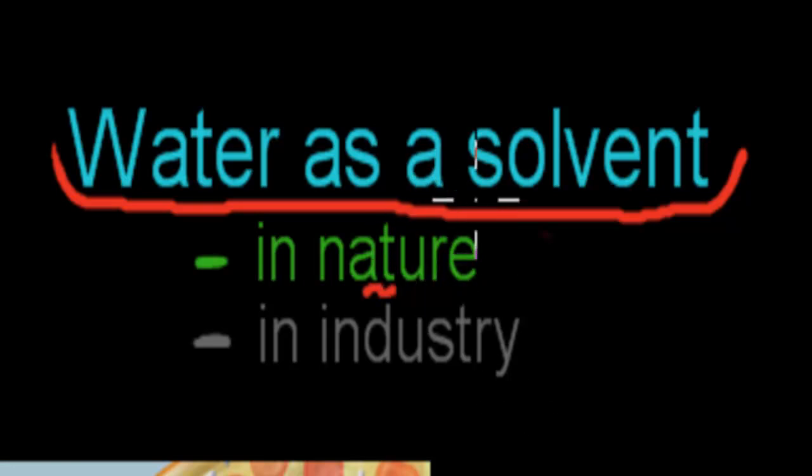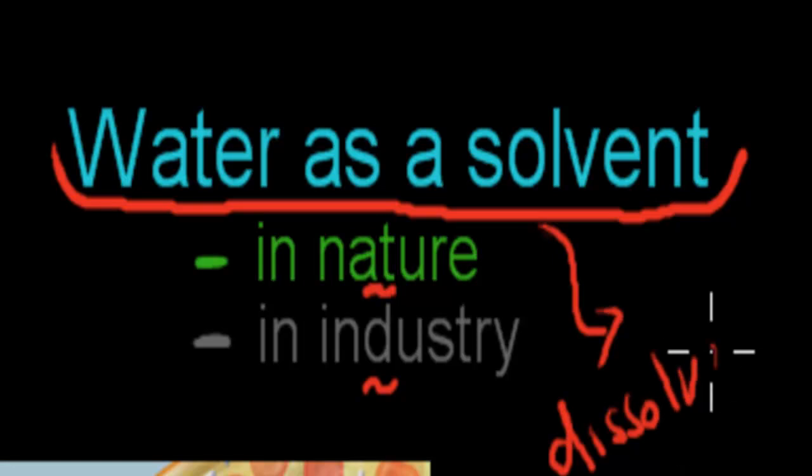In this video I'm going to talk about how water plays an important role as a solvent both in nature and in industry. Remember, a solvent was something that can dissolve different types of substances. So for example, water is a solvent because water can dissolve sugar or water can dissolve salt. We have to talk about how water can be an important solvent in nature and in industry.